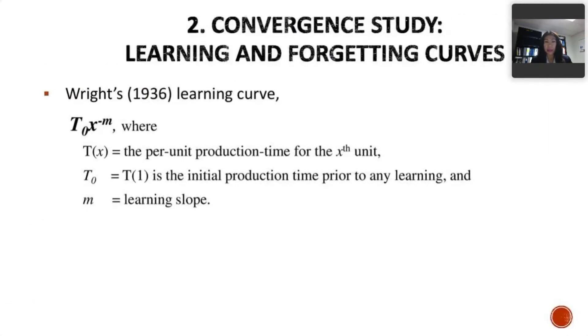So here is the learning curve. We use the Wright learning curve. The functional specification is here. The per unit production time for the X unit is defined as T_0 times X to the power of negative M. T_0 is the initial production time prior to any learning, and M here is the learning coefficient.